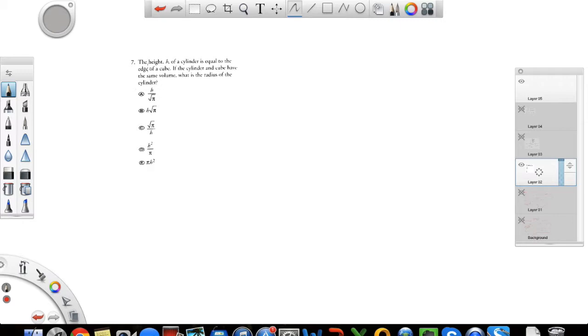So first we have this one here. The height h of a cylinder is equal to the edge of a cube. So the height h is equal to the edge e. I'm going to put some symbols for these. So h is the height and e is the edge of the cube. If the cylinder and cube have the same volume, then what is the radius of the cylinder? You need to find the radius.